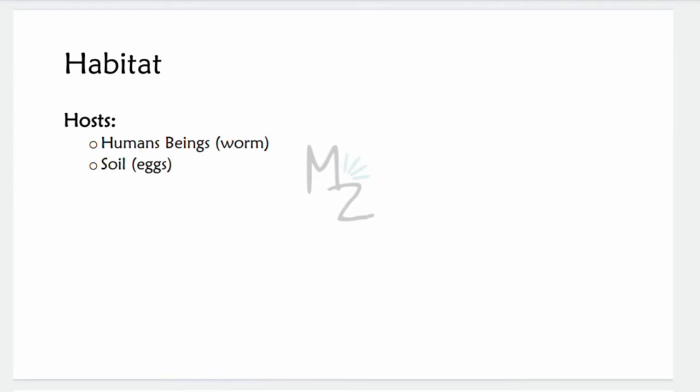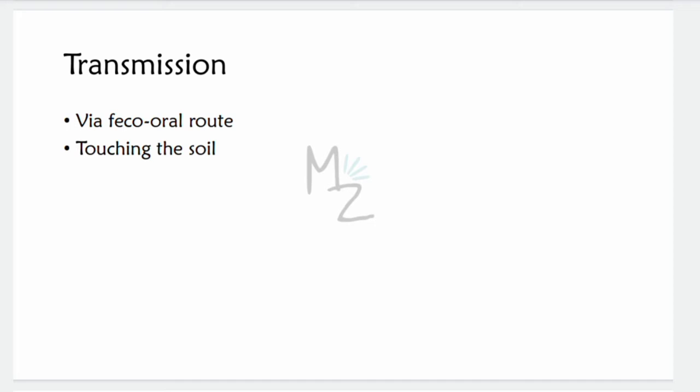Human beings are the host for the worms. Eggs deposit in warm, moist soil, so the habitat of eggs is soil. Transmission occurs by the feco-oral route or by touching the soil — for example, people who walk barefoot on soil may pick up eggs and get infected, causing whipworm infection.